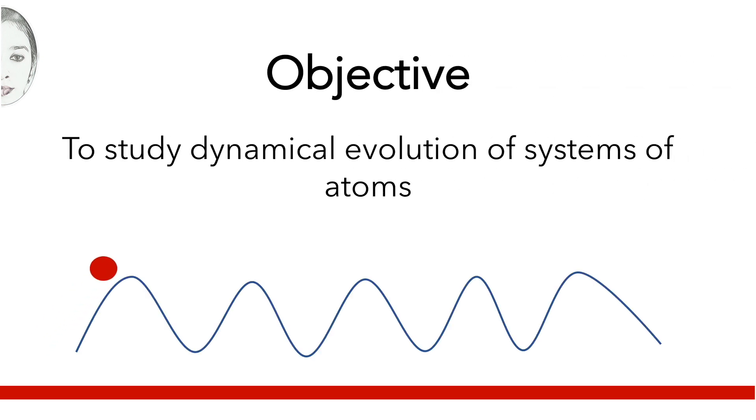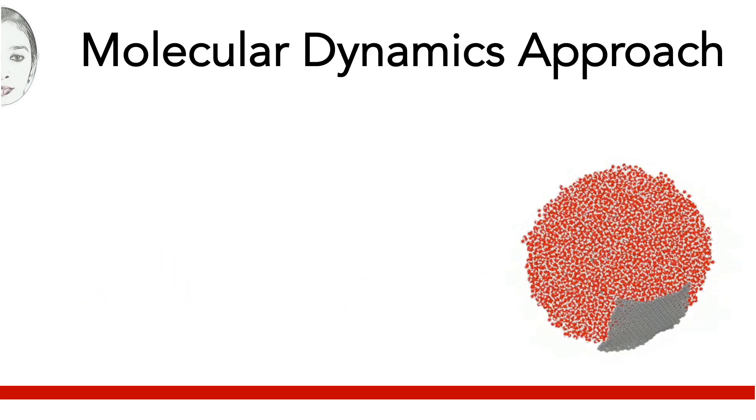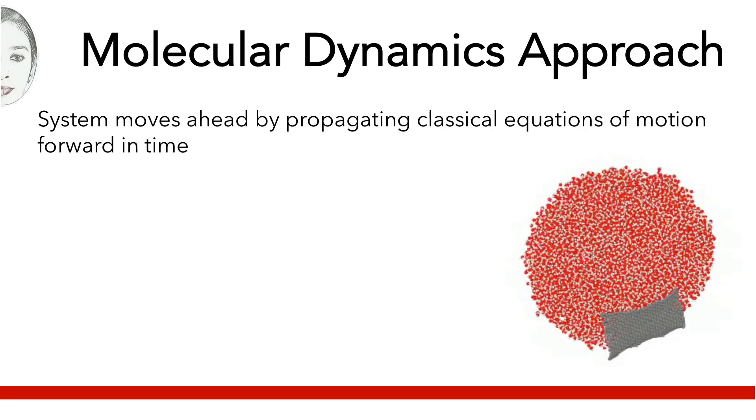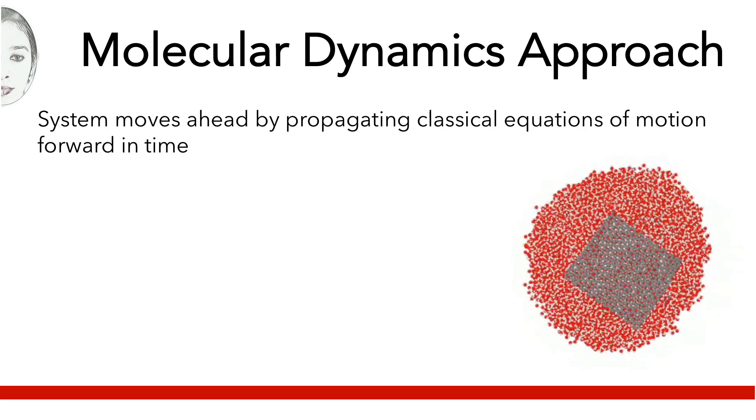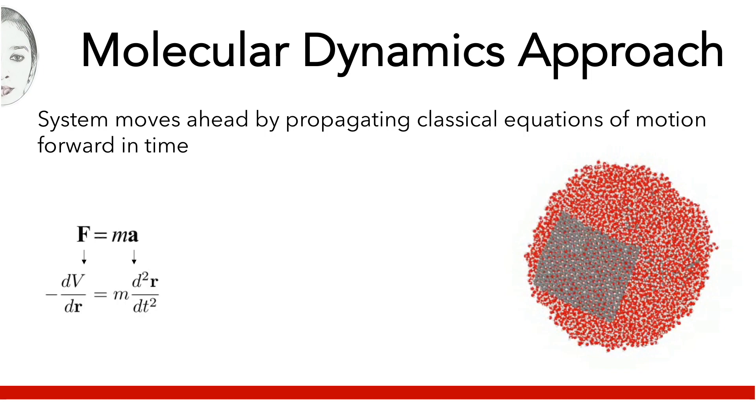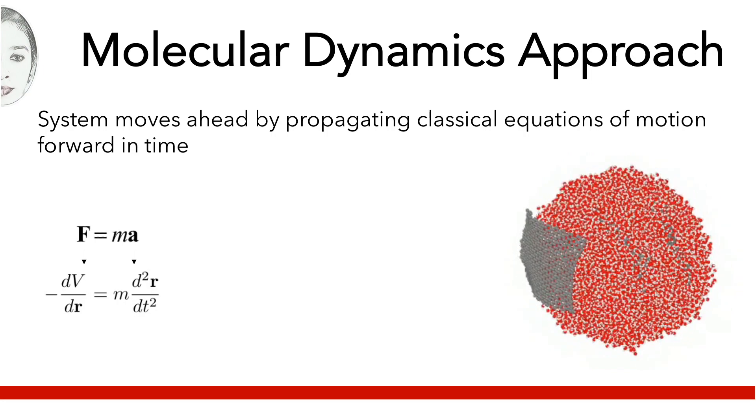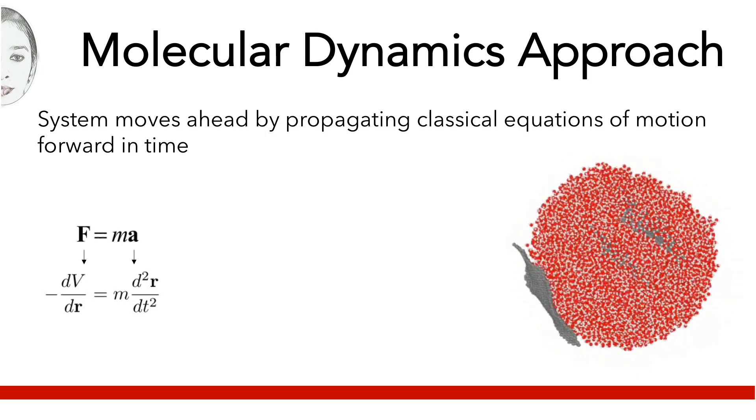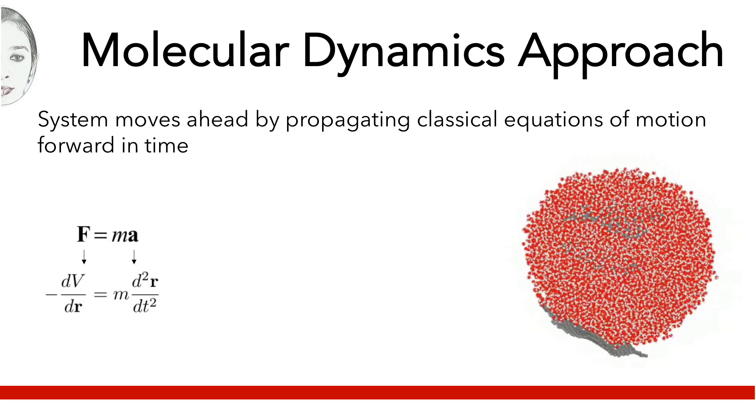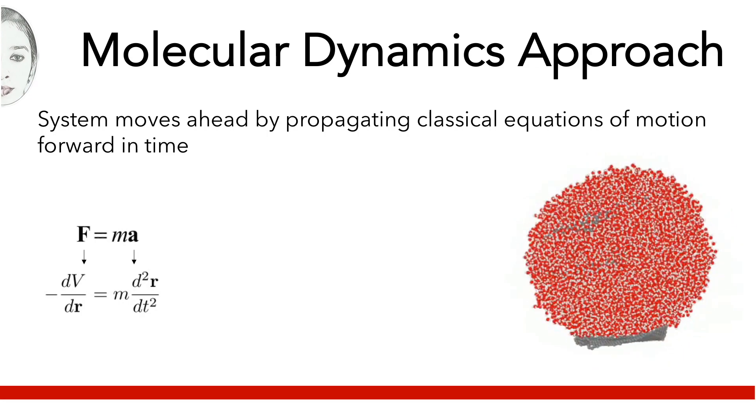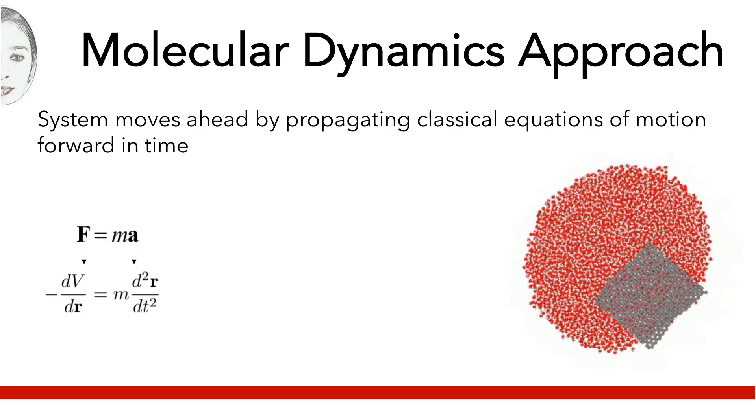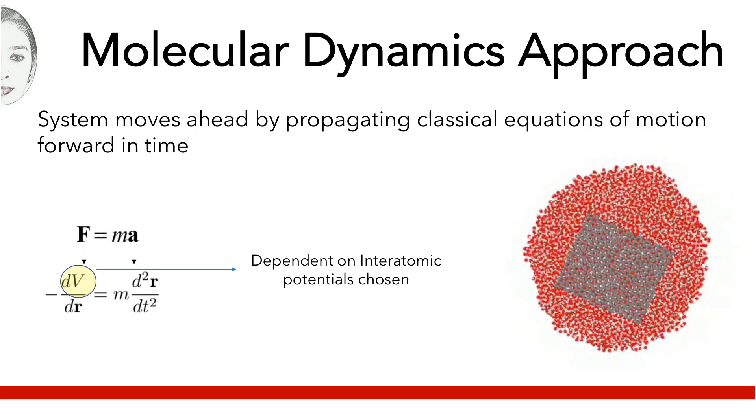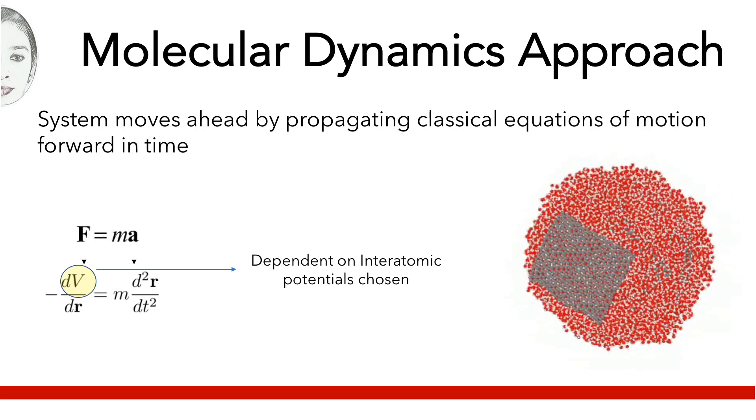The objective of atomistic and molecular simulation is to study dynamic evolution of a system of atoms. The most popular and conventional approach uses molecular dynamics, where the positions of atoms in the system are defined by propagating classical equations of motion forward in time. Force on every atom is defined by differentiation of atomic potentials.